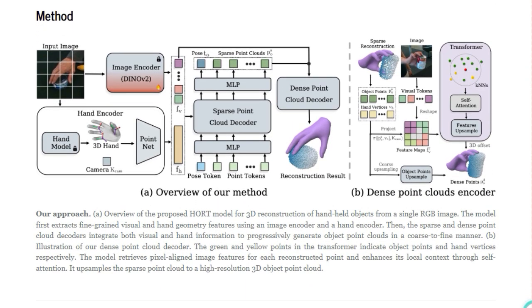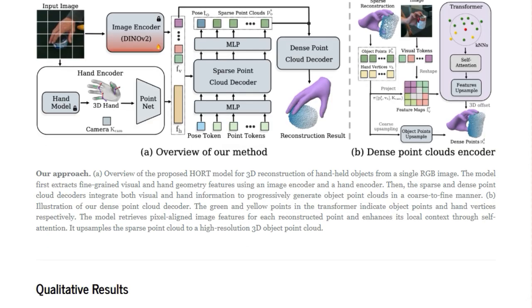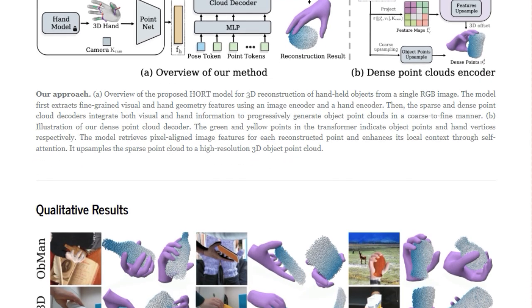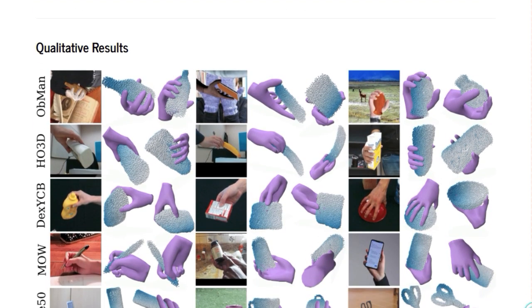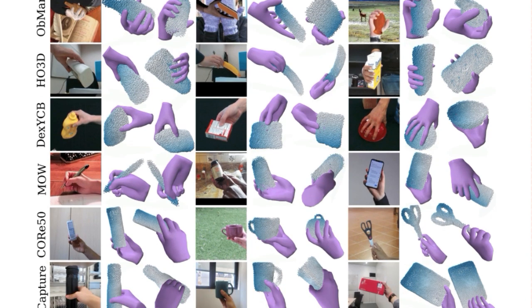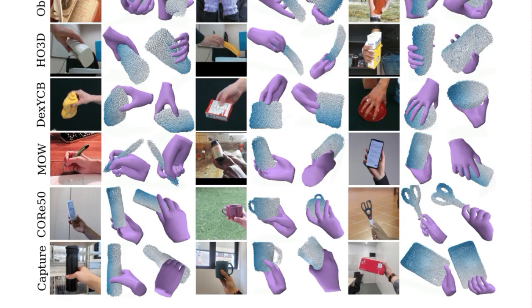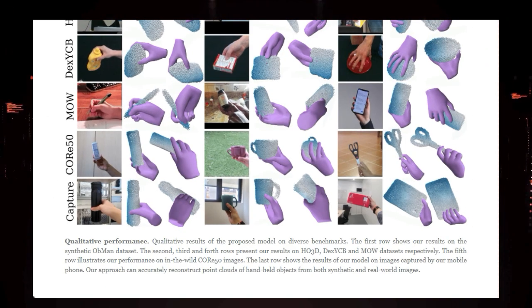HORT uniquely integrates image features with 3D hand geometry — by understanding the shape and position of the hand holding the object, the model can more accurately predict the object's 3D form and its pose relative to the hand. During the refinement stage, the model uses pixel-aligned image features for each reconstructed point and enhances its understanding through self-attention mechanisms, allowing it to gather detailed local context and produce more accurate reconstructions. The result is a method that achieves state-of-the-art accuracy on both synthetic and real-world data with much faster inference speed, making HORT a promising approach for real-time applications and handling diverse in-the-wild images.